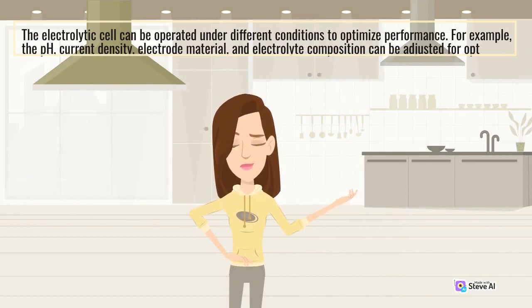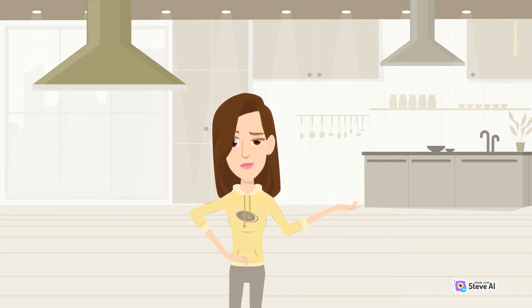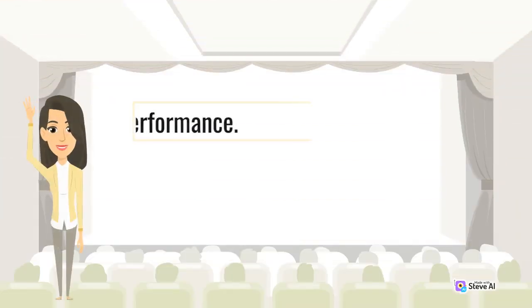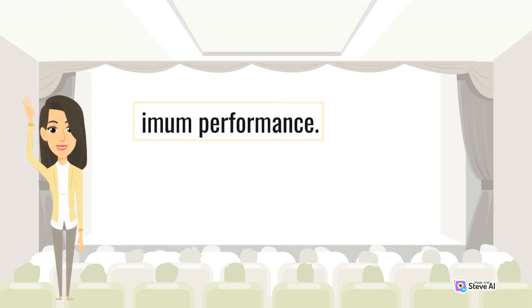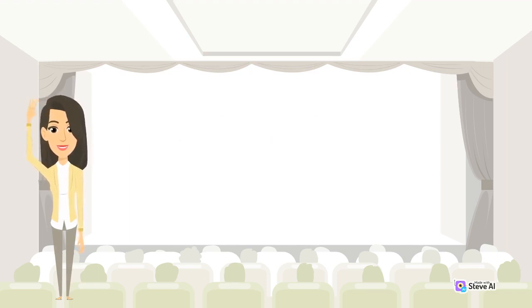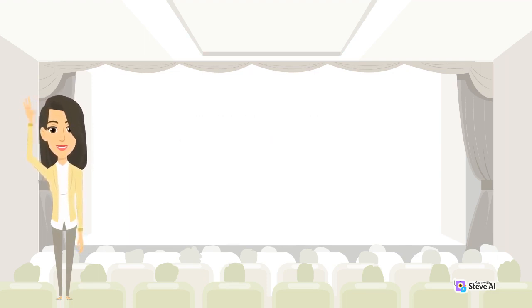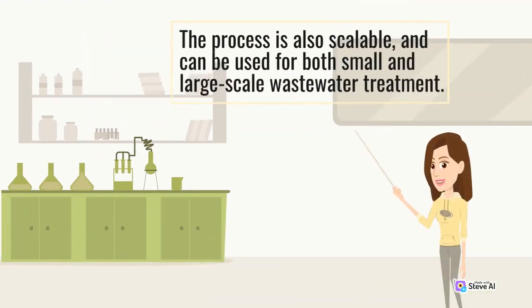The electrolytic cell can be operated under different conditions to optimize performance. For example, the pH, current density, electrode material, and electrolyte composition can be adjusted for optimum performance. The process is also scalable and can be used for both small and large-scale wastewater treatment.